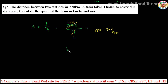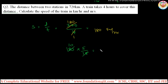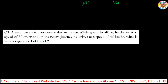Now to convert 180 kilometers per hour into meters per second, multiply by 5/18. So 180 × 5/18 = 50 meters per second. That means in one second the train covers 50 meters, while in one hour it covers 180 kilometers. These are the basic things.